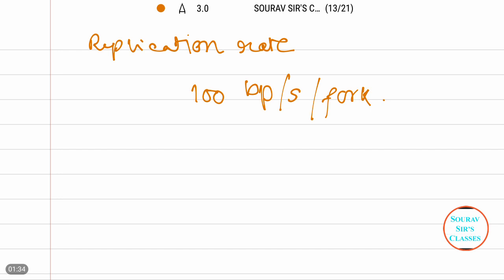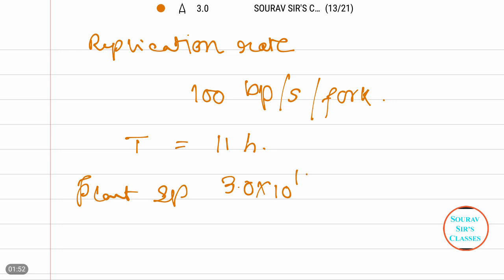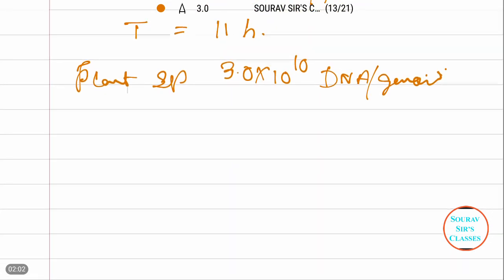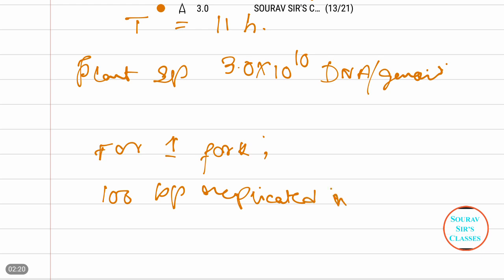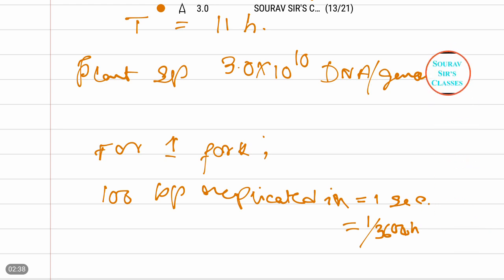The total duration of DNA synthesis is 11 hours. The plant species has 3.0 × 10¹⁰ base pairs of DNA per genome. For one fork, 100 base pairs are replicated in one second, which we can also write as 1/3600 hours.